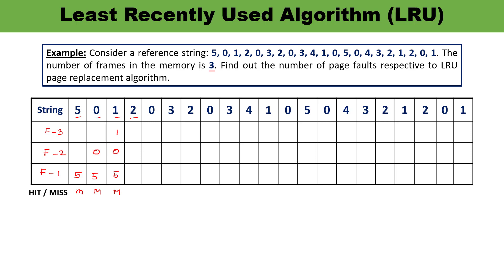Next digit is 2. You have to check whether 2 is available in the frames or not. 2 is not available, so this is the condition of miss — there must be a replacement. Looking back before 2: the order was 1, then 0. This means 5 is the least recently used, so 2 will replace 5. The frames now hold 2, 0, and 1. Next digit is 0. 0 is already available — this is the condition of hit. Same data, no replacement will occur.